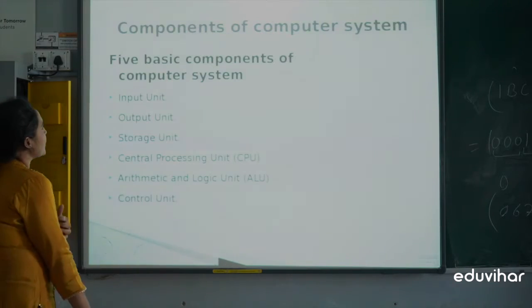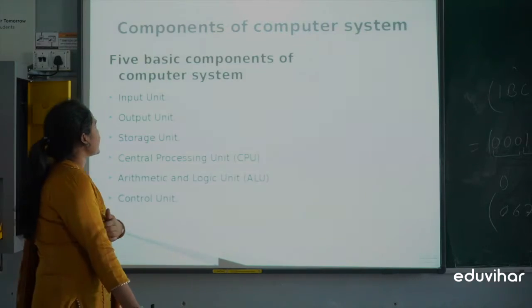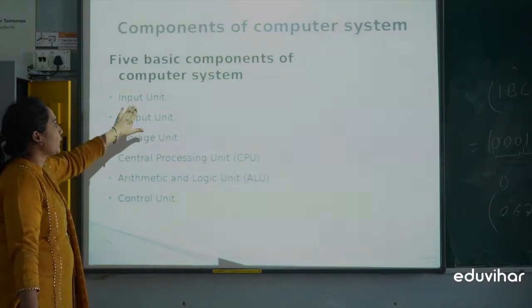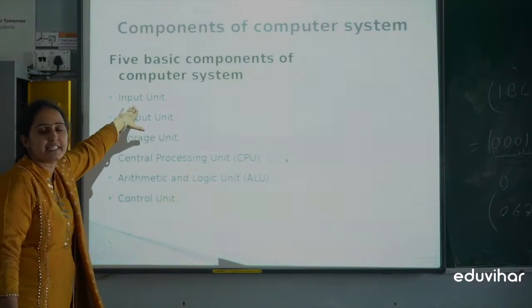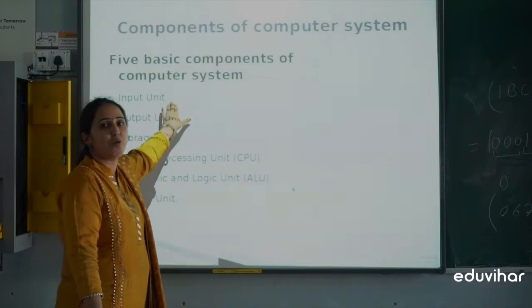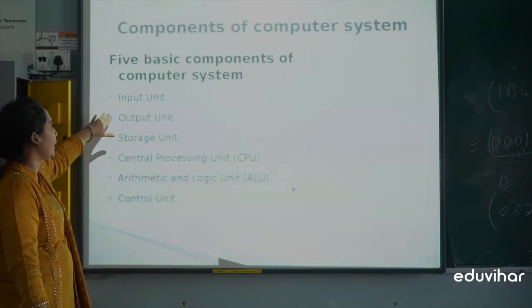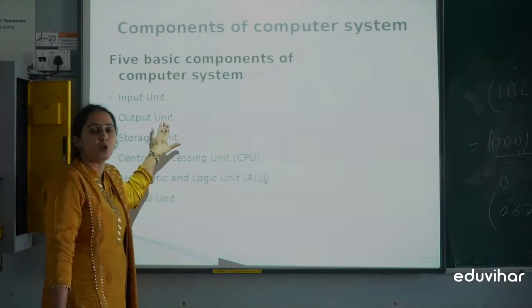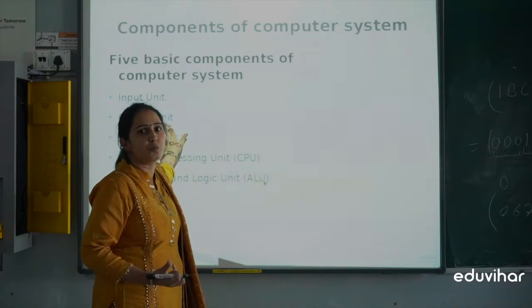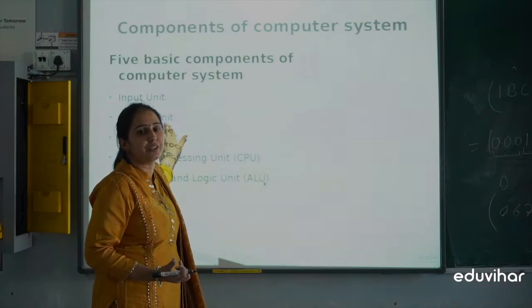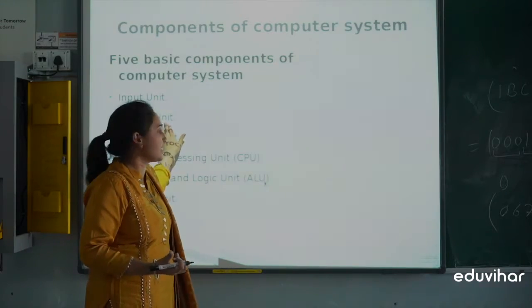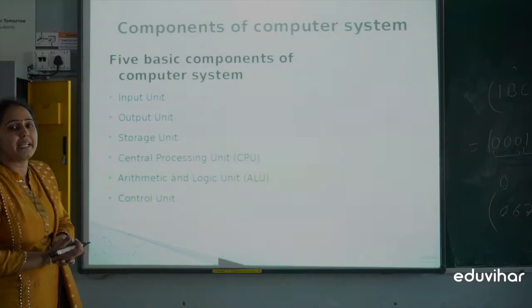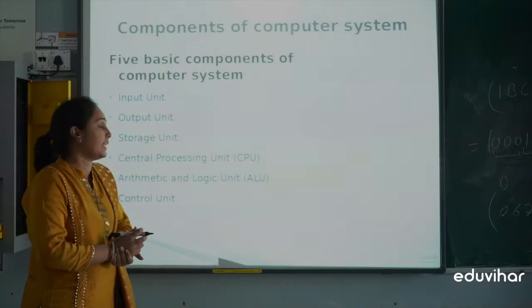The components of a computer system: mainly the first is the input unit — keyboard, scanner, joystick. The output unit includes printer, plotter, and speaker. The storage unit includes DVD, magnetic tape, and magnetic disc.